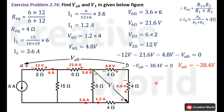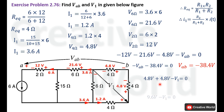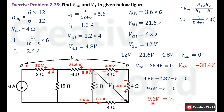Similarly, we apply Kirchhoff's voltage law in the second semi-closed loop with counterclockwise current to calculate V1. The first 4.8 Volt is taken with a positive sign and the next 4.8 Volt also with a positive sign, while V1 is taken with a negative sign. Adding these gives 9.6 Volt, so V1 equals 9.6 Volt.